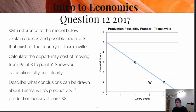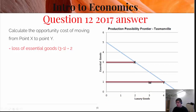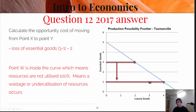Here's the next question. We're looking at a production possibility frontier and you had to use the concept of opportunity cost to show the movement from X to Y, and then work out what happens at point W. So let's do the opportunity cost first. We've lost essentially two goods — you must use a graph. At point X we were producing three essential goods, and when we moved to Y, now we're only producing one essential good. So we've had a loss of two units: three minus one equals two. We also had an increase of luxury units from two to four, so an increase of two. The answer is an opportunity cost of two.